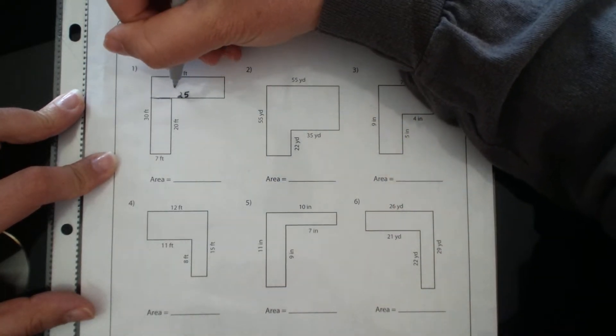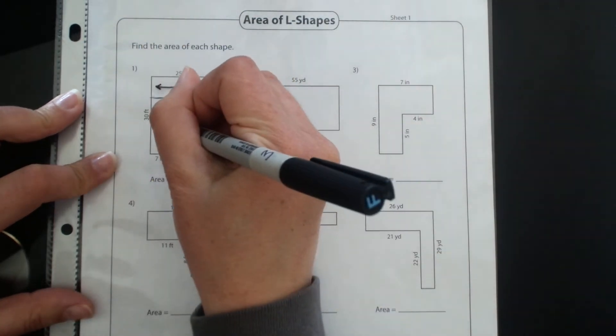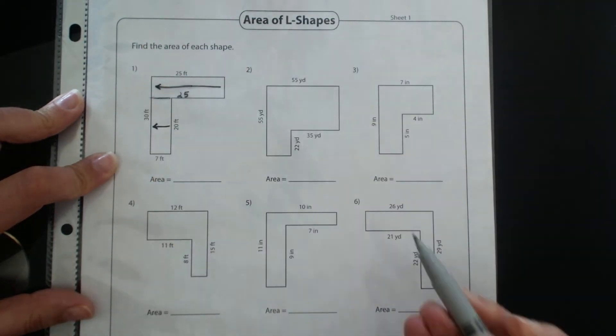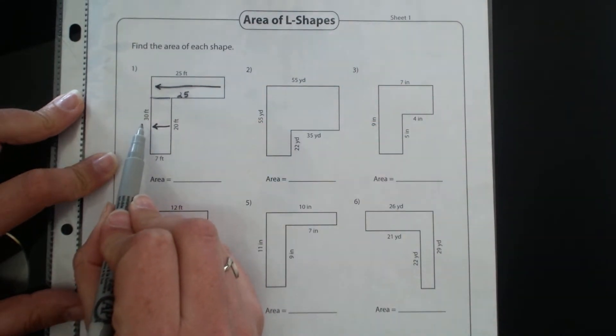A good strategy is if you're looking for a missing side length, draw an arrow across. And then I'm going to draw an arrow here because I know this side length plus this side length should give me this total of 30.